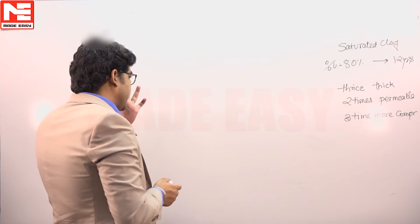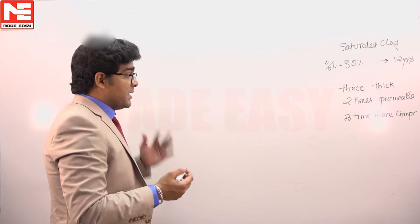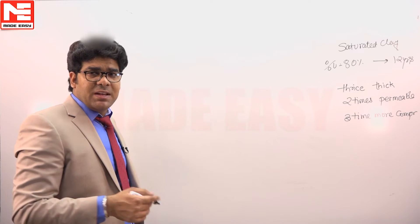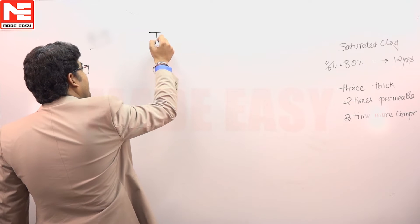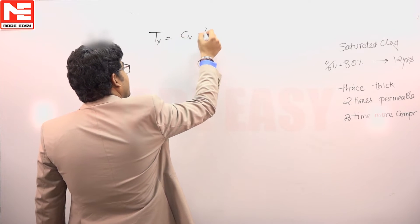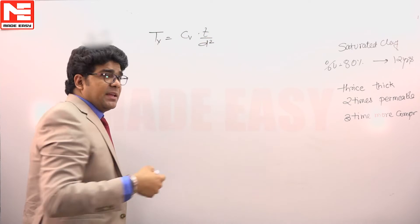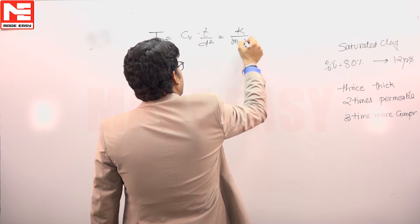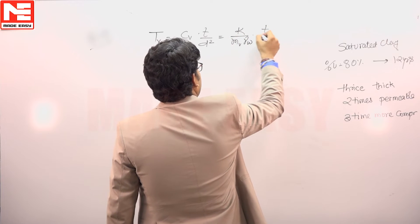In this case, the permeability and compressibility MV is changing, and the thickness or length of drainage path is changing. We know that TV is equivalent to CV times T upon D squared, and this CV can be written as K upon MV gamma W into T upon D squared.